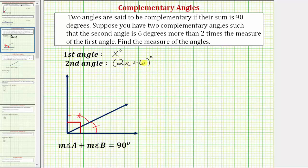Again, this angle is six more than two times the measure of the first angle. Looking at our diagram, let's measure this angle x degrees, and this angle the quantity two x plus six degrees.